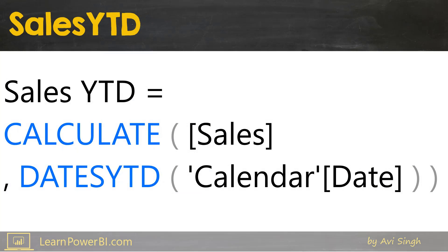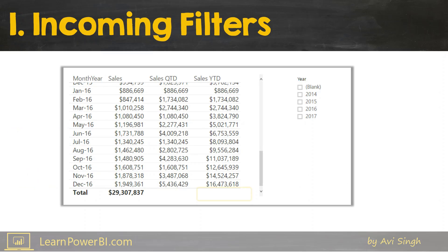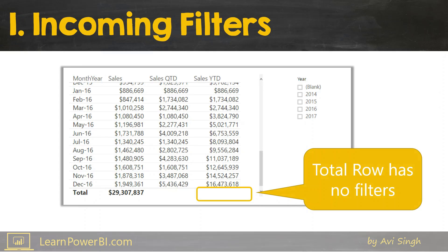Let's start by first looking at the measures. This is Sales Year to Date: CALCULATE(Sales, DATESYTD(Calendar[Date])). Let's start with step one in the I CAN rule, which is "I" for incoming filters. Remember, every cell is an island, so whenever you're debugging your measures, think about it from a single cell perspective.